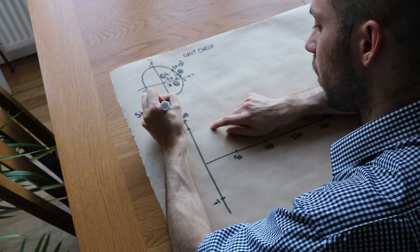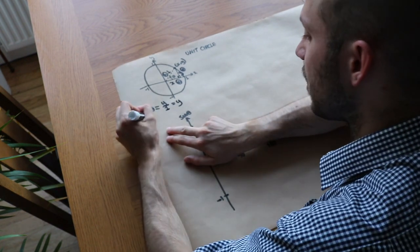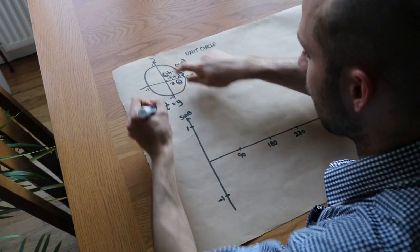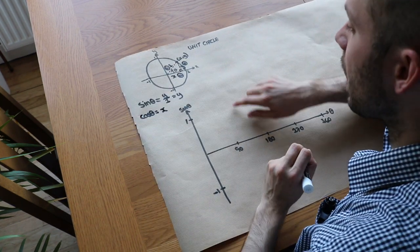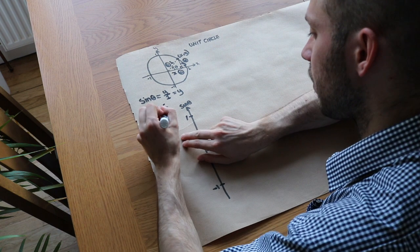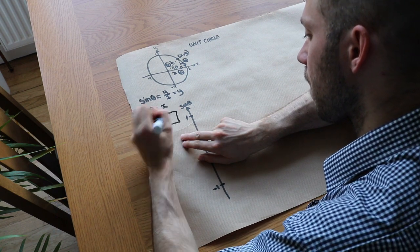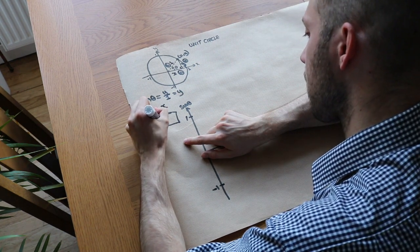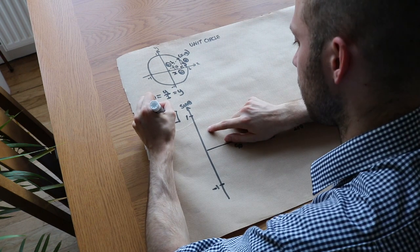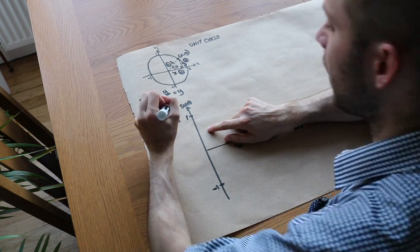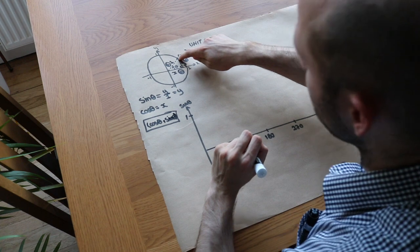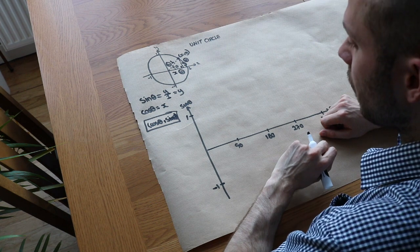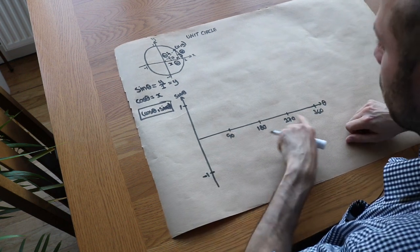But the thing is, y over 1 is just y. So we've got sine of theta's y. And similarly, cos of theta is adjacent over hypotenuse. That's x over 1, which is just x. And that means this coordinate here is, well, the x value we said was cos of theta. So it was cos of theta. And the y value, y, was sine of theta. So the coordinate of some point with an angle rotation of theta on the unit circle is cos theta, sine of theta. That's the coordinates. Now, we can use that to find cos and sine of values like 0, 90, 180. So let's do it.